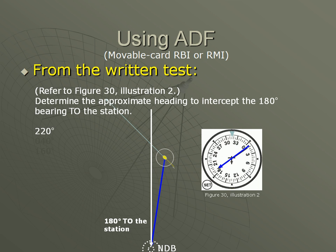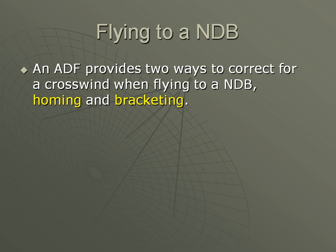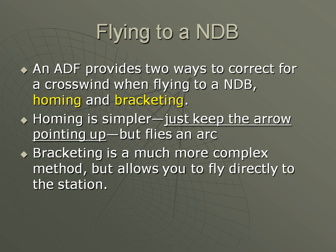If the winds were calm, all we would need to do is turn toward the needle, and we would fly to the station. But to correct for a crosswind, there are two techniques we could use: homing and bracketing. Homing is, by far, the simplest — turn toward the needle and keep it pointing up. But it also flies an arc, which is less efficient. Bracketing, on the other hand, takes some practice to perfect, but lets you fly straight to the station.